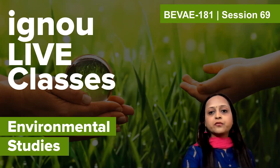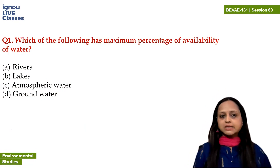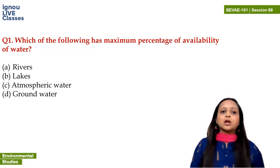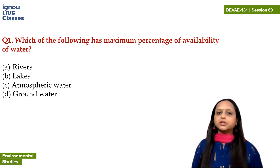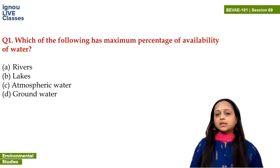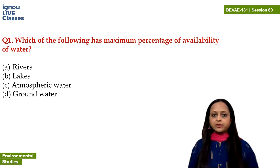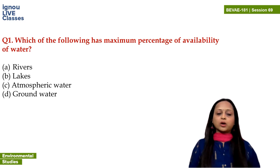Let's start with the first question of session 69. Which of the following has the maximum percentage of availability of water? Options are: river, lakes, atmospheric water, or groundwater.